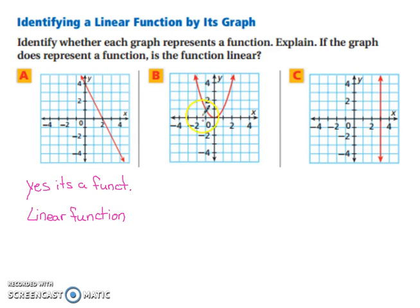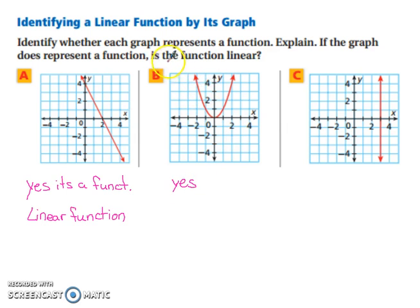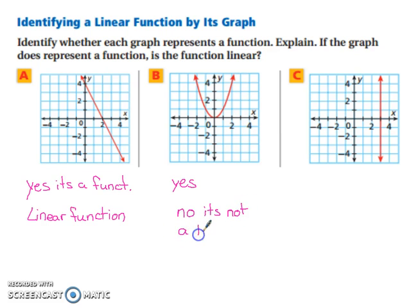Is graph b a function? Yes — each domain value is paired with exactly one range value, meaning for every x value you only get one y output. So yes, it's a function. But is it a linear function? It doesn't form a straight line, so no, it is not a linear function.